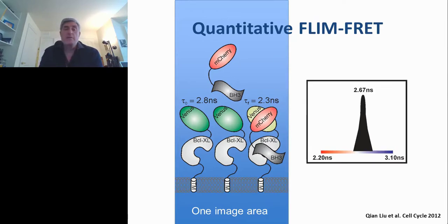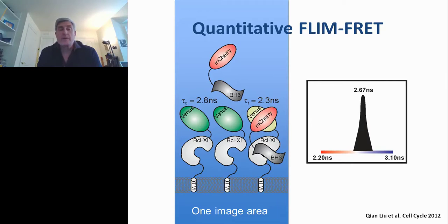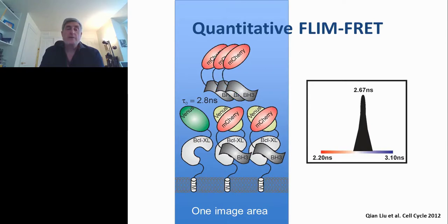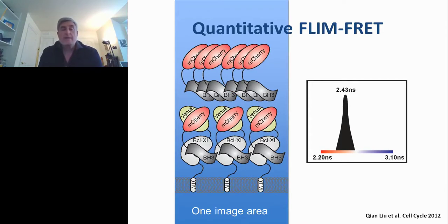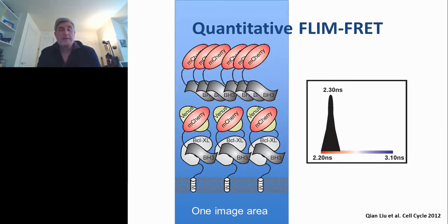If we now introduce the binding partner, typically by transient transfection, this decay curve centered around 2.8 nanoseconds is going to shift. When you have a single mCherry-BH3 protein in this pixel, you now have one at 2.3 and two at 2.8, so the lifetime is around 2.7 nanoseconds. You need lots of different pixels that have increasing amounts of mCherry in them. As the lifetime drops to 2.43 nanoseconds, and when you finally saturate, you get down to 2.3 nanoseconds. By using transient transfection with lots of different cells having different amounts of acceptor, you get the information you need for a binding curve.